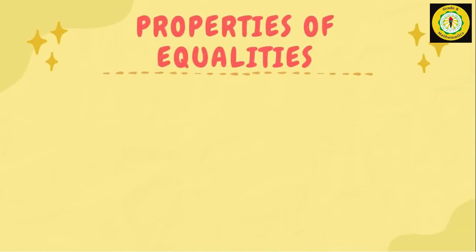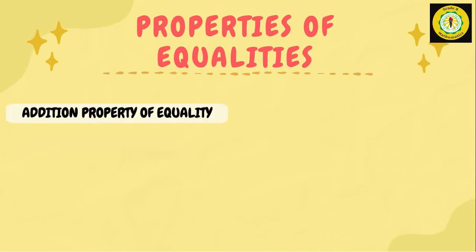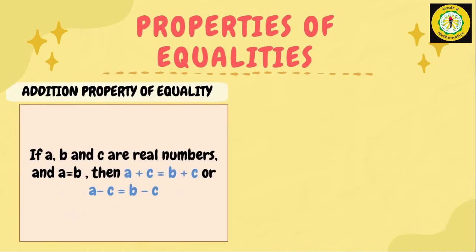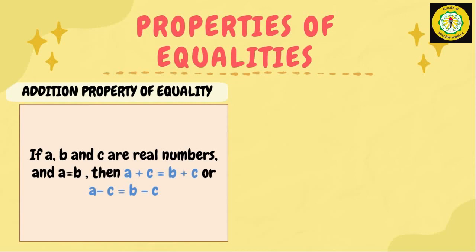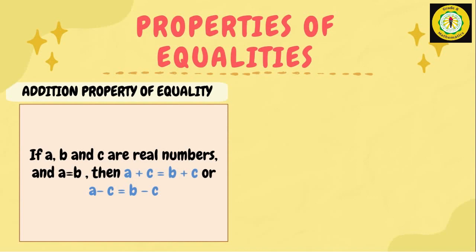For us to easily understand this topic, we must first know the properties of equalities. First, the addition property of equality. It states that if a, b, and c are real numbers and a equals b, then a plus c equals b plus c, or a minus c equals b minus c. In other words, we can always add or subtract the same quantity or number to both sides of an equation.